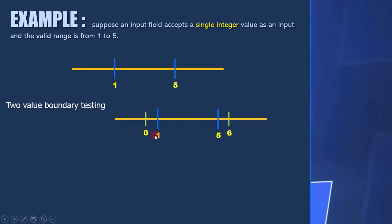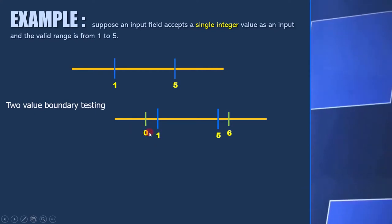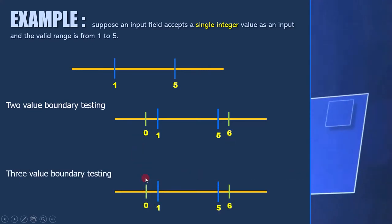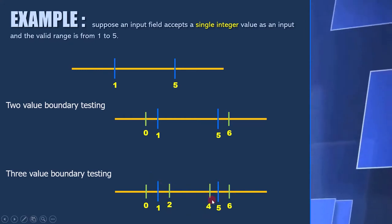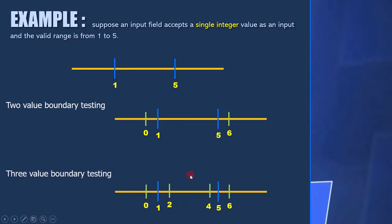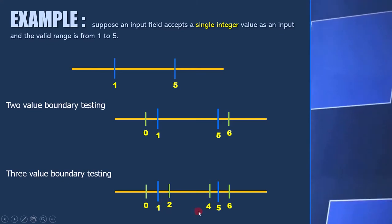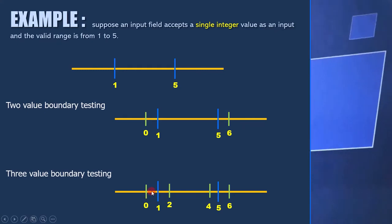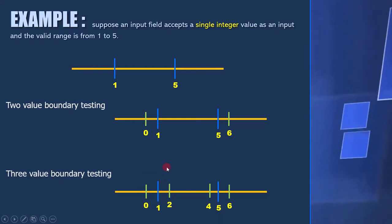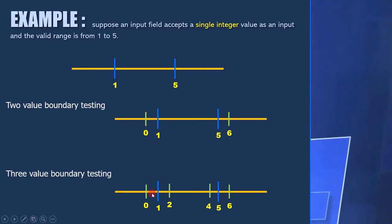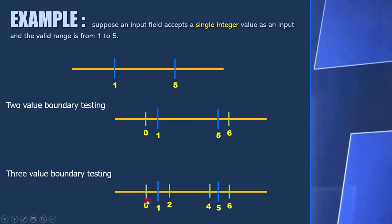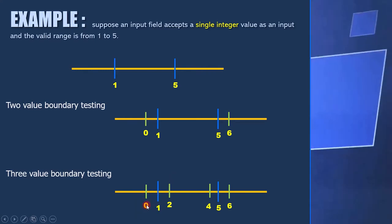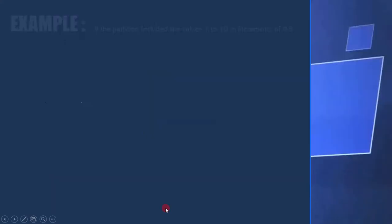For two-value boundary testing, you need to take two values outside the range — here we take 0 and 6. For three-value boundary testing, you need to consider two values outside the range and two values inside the range. We take 0 and 6 outside, and then test 2 and 4 inside. At each boundary in two-value testing, we test two values: one at the boundary and one outside. In three-value testing, we test three values: one at the boundary, one outside, and one inside.